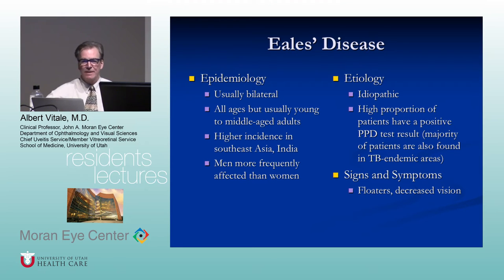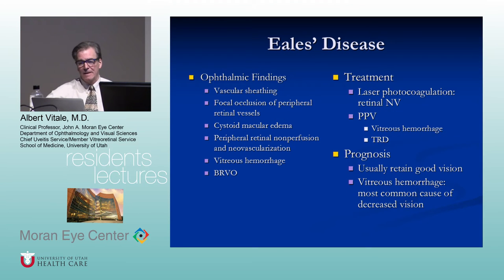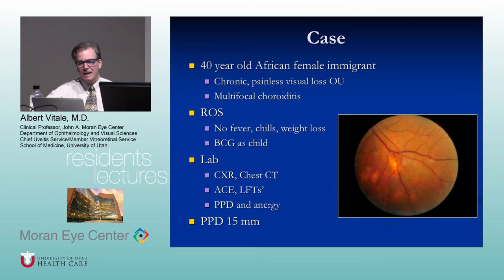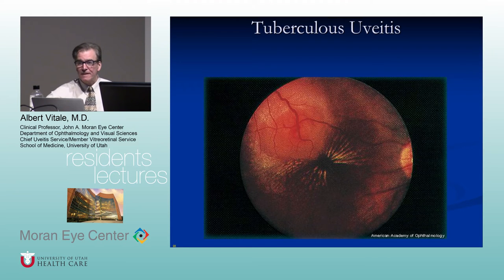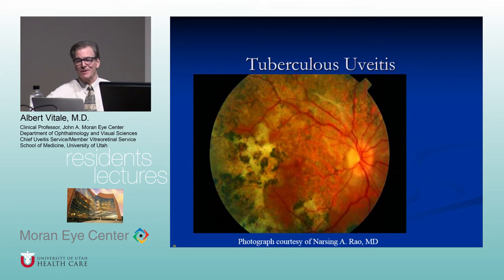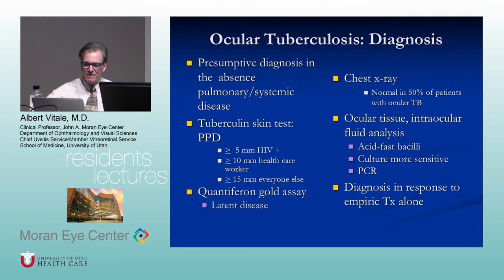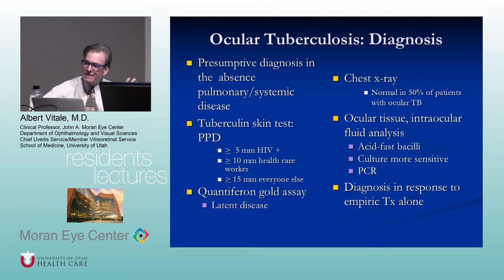A 40-year-old African female immigrant with multifocal choroiditis, no fever, chills, or weight loss, and a 15mm PPD — this is tuberculosis. TB can also produce a large granuloma or tuberculoma. The many phases of TB include serpiginous-like tuberculosis. It's usually a presumptive diagnosis. Quantiferon Gold tests latent tuberculosis, not active disease. The chest x-ray can be normal in patients with ocular TB — extra-pulmonary sites are important to consider. Sometimes you treat empirically with anti-TB treatment.